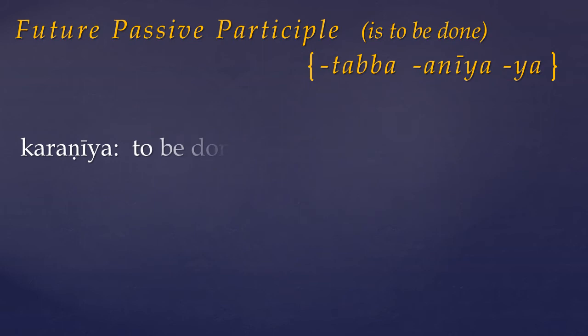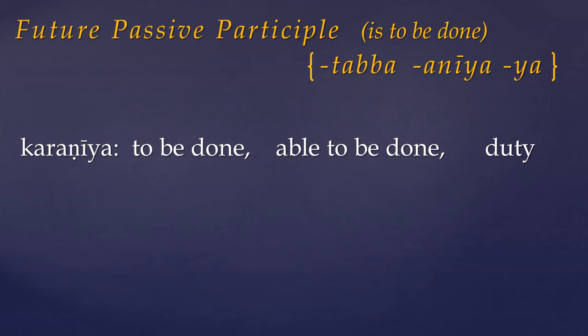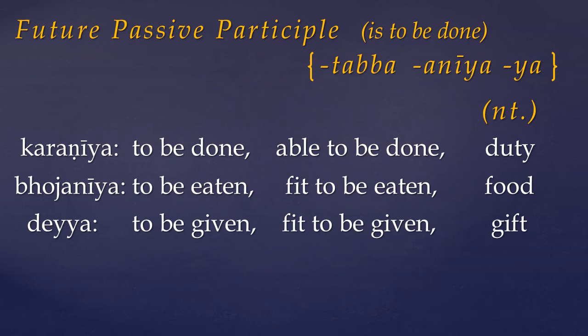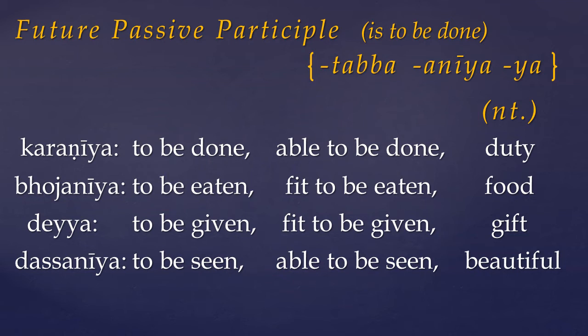So karaniya literally means to be done or capable of being done, and in the neuter it can be used as a noun meaning one's duty — literally, that which ought to be done. And similarly, bojaniya means to be eaten, capable of being eaten, or fit for eating; but when used in the neuter, it can simply mean food. So the future passive participle, like the past participle, can be used either as a finite verb, an adjective, or even a noun. Although all forms do get used in all of these ways, the affix tabba is more often used as a finite verb, and aniya as an adjective.